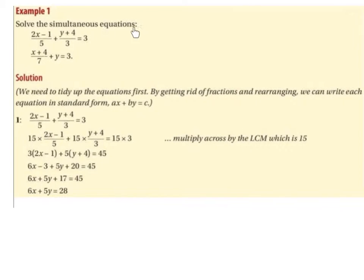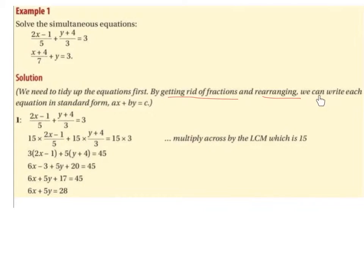Solve the simultaneous equations: (2x minus 1) over 5 plus (y plus 4) over 3 equals 3, and (x plus 4) over 7 plus y equals 3. We need to tidy up the equations first by getting rid of the fractions and rearranging. We can write each equation in standard form ax plus by equals c, getting the x's and y's on the left of the equal sign and constants on the right.